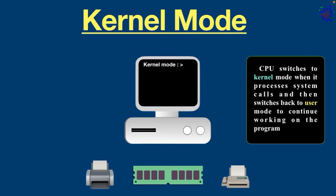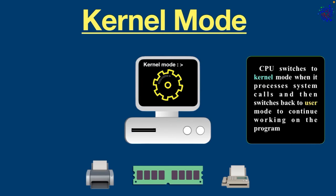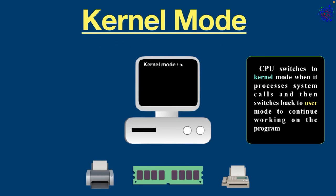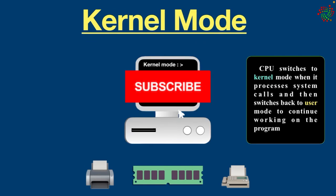The bottom line is: while a program is running in kernel mode, it has unlimited access to the hardware. However, if a program is running in user mode, it has limited access to the CPU and memory. I hope you understood the difference between user mode and kernel mode. Make sure you hit the subscribe button and I'll catch you in the next video.